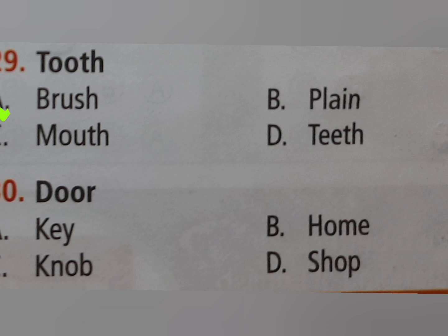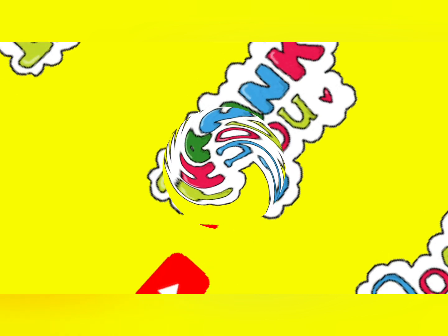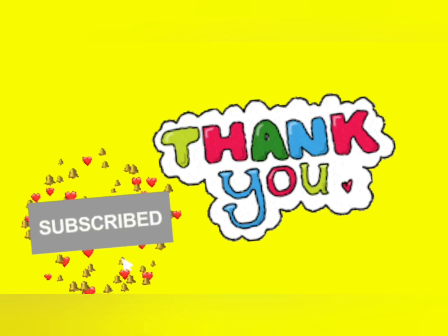The right answer is option A brush — toothbrush. Tenth: door — option A key, option B home, option C knob, option D shop. The right answer is option C knob — door knob.